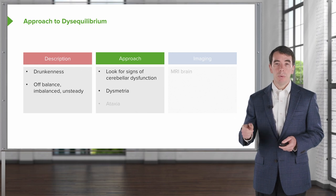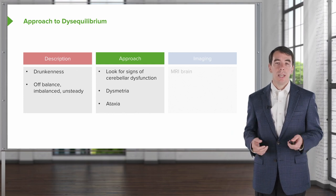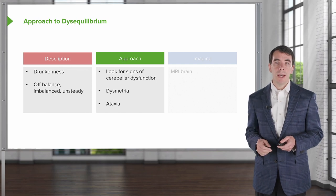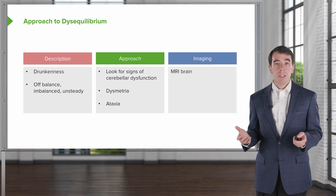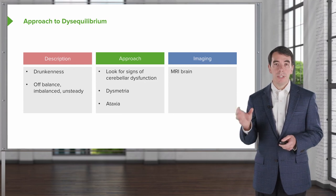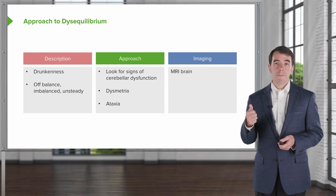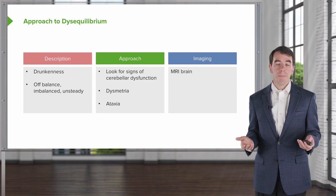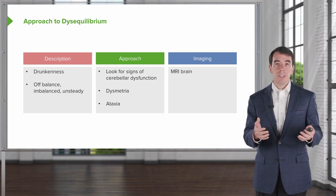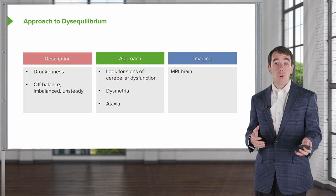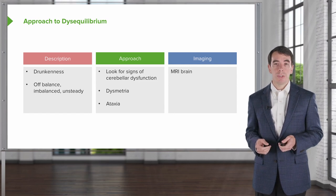We look for dysmetria with finger-to-nose testing or heel-to-shin testing, or ataxia as the patient is sitting upright or walking. Those physical exam findings, either on the patient or in a clinical vignette, point us toward needing to evaluate the cerebellum further. Our diagnostic investigation will center around MRI of the brain. We may do some laboratory testing and perhaps genetic testing, but our first step is to image the cerebellum.